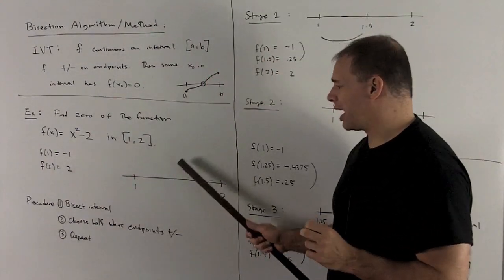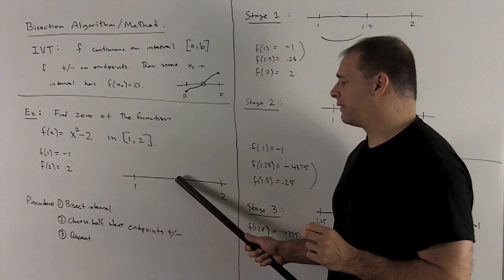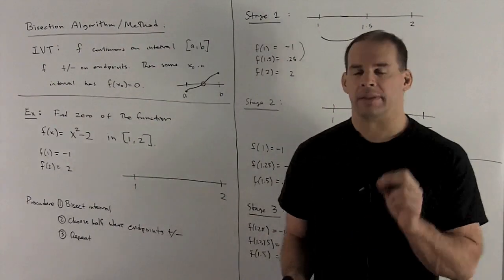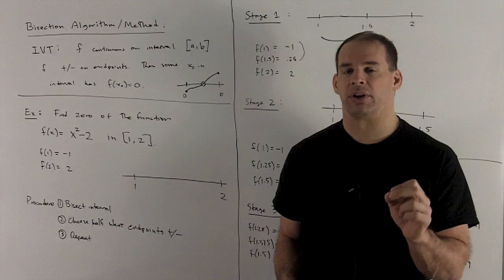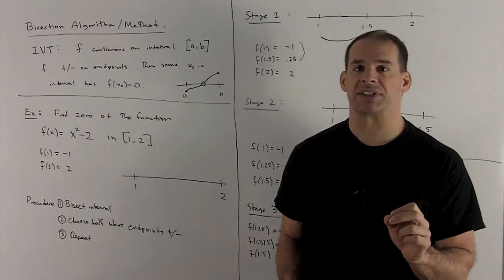So what's our procedure going to be? We're going to have our interval. I'm going to cut it in half. We're going to evaluate the function at the midpoint. The value of that midpoint is either going to be a positive or negative number or 0. If I get 0, I can stop. I've found my 0.